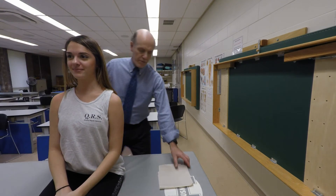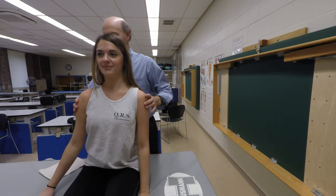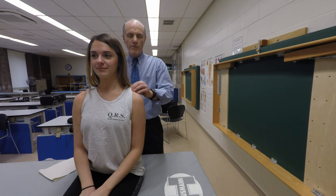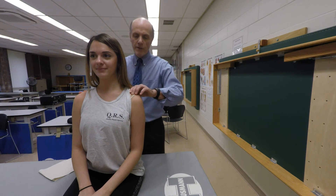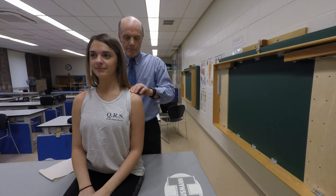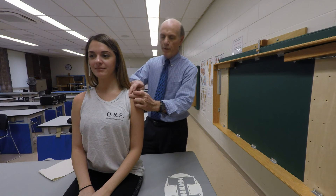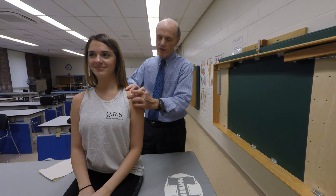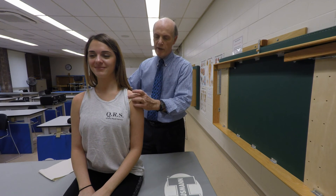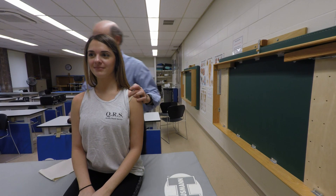One other thing we're going to palpate is the coracoid process. You're going to find the acromion of the scapula and just move about a half an inch, and there'll be a little bony knob that you'll be able to palpate there. You have to be careful because there's not a lot of tissue covering it and it can be sensitive on people. This is the coracoid process.